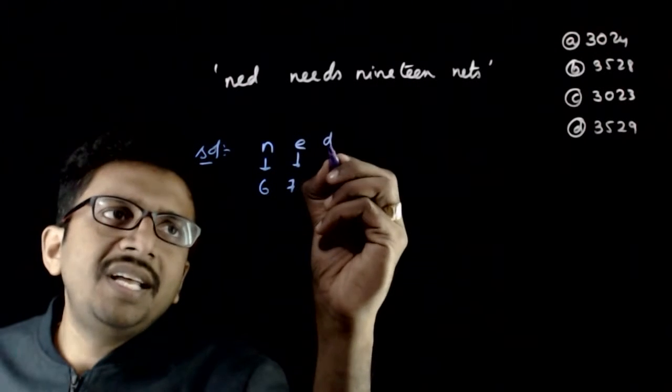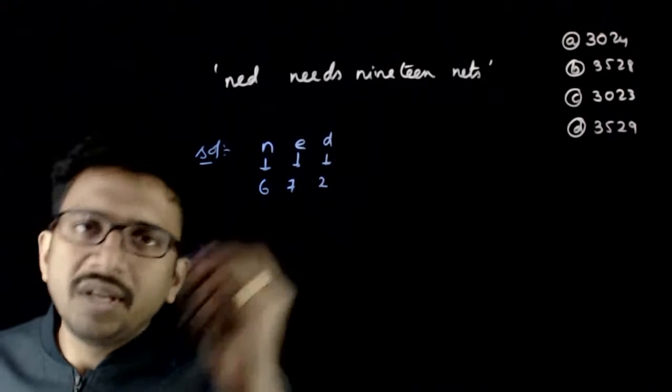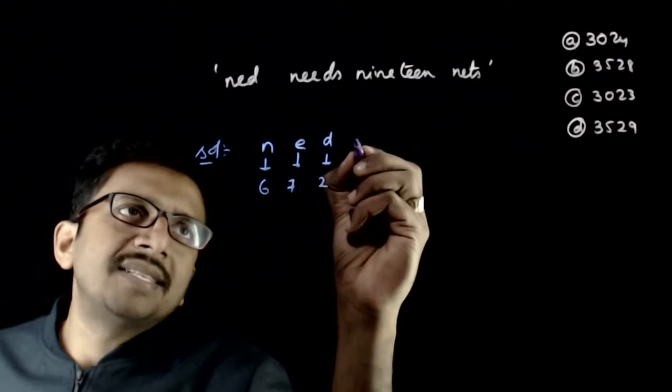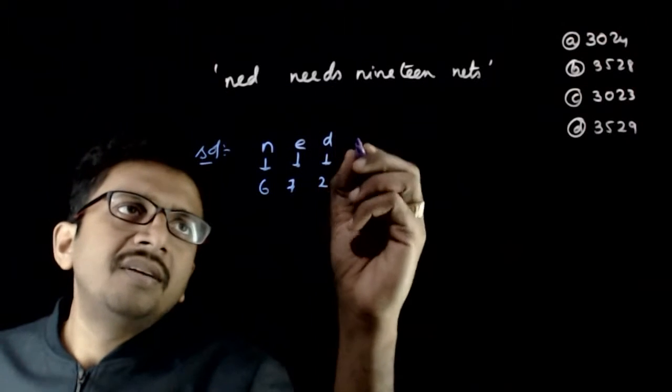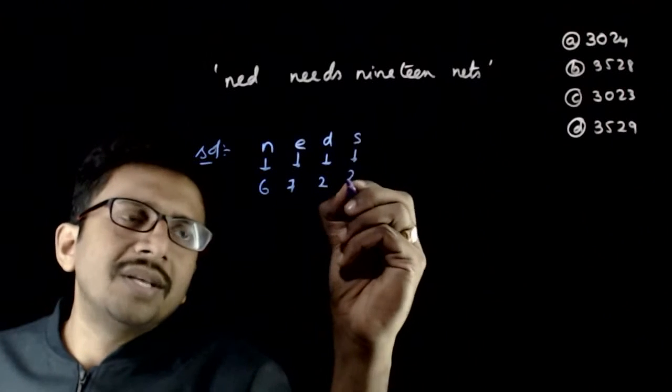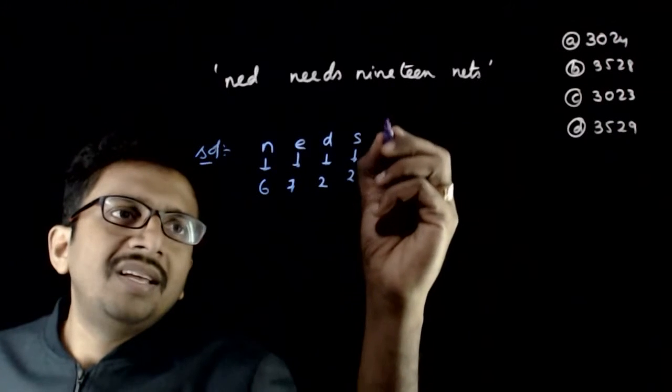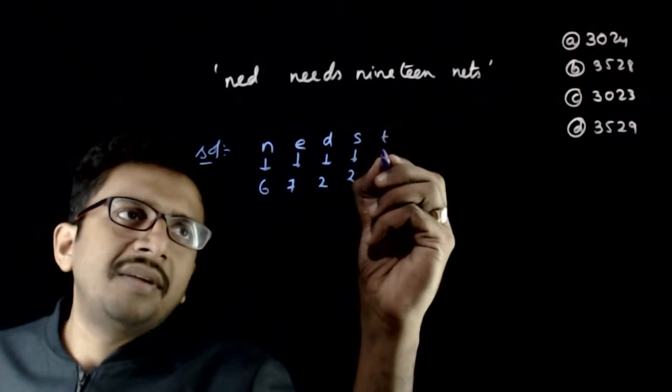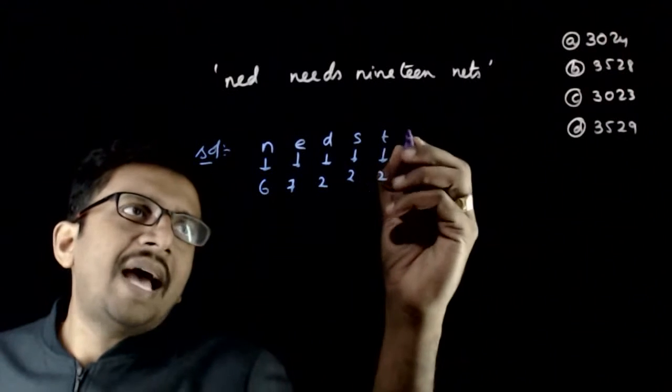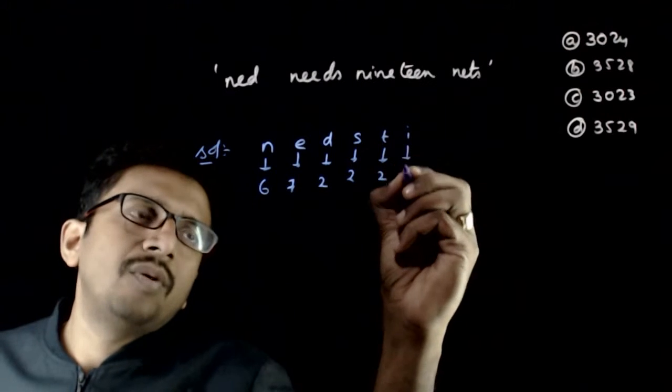And how many d's are there? So 1, 2. You have 2 d's. How many s's are there? You have 1 s, 2 s's. And how many t's are there? 2 t's. And how many i's are there? So you have 1 i.